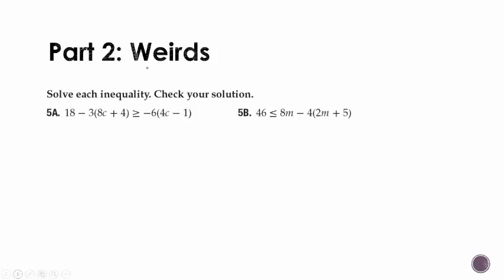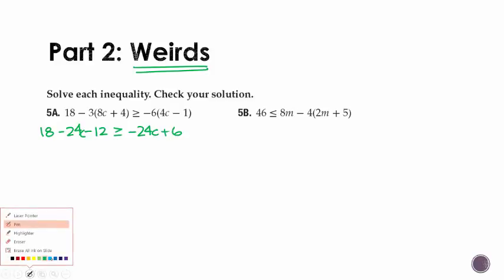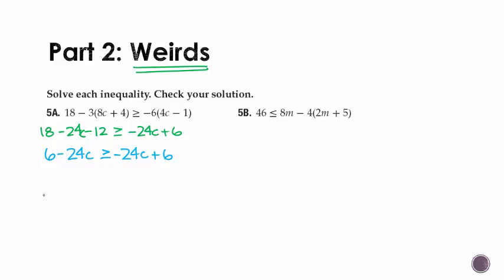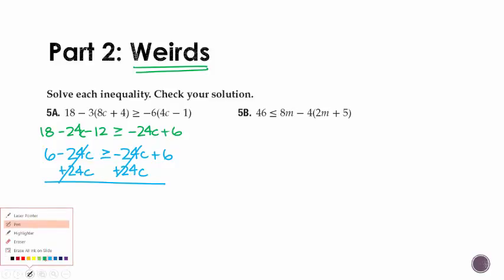These ones are called weirds for a reason. So let's solve them and see what happens. So when I look at this one, I'm going to get rid of my parentheses. And then I'm going to try solving. Oops, I forgot my c. So let's simplify the stuff on this side. 18 minus 12 will give me 6 - 24c. It's greater than or equal to -24c + 6. If I try moving all my c's to one side, something weird happens. And both sides, the 24c's cross off. And I'm left with 6 is greater than or equal to 6.